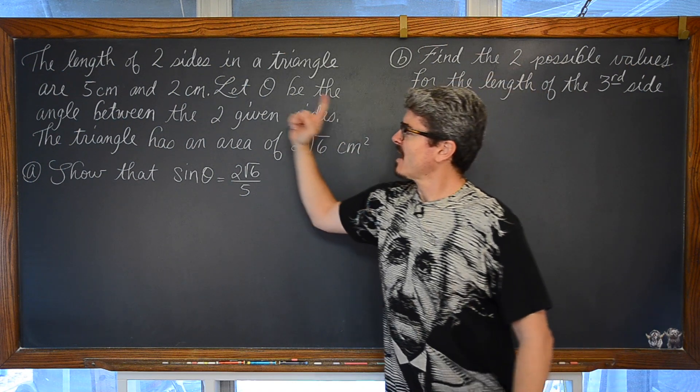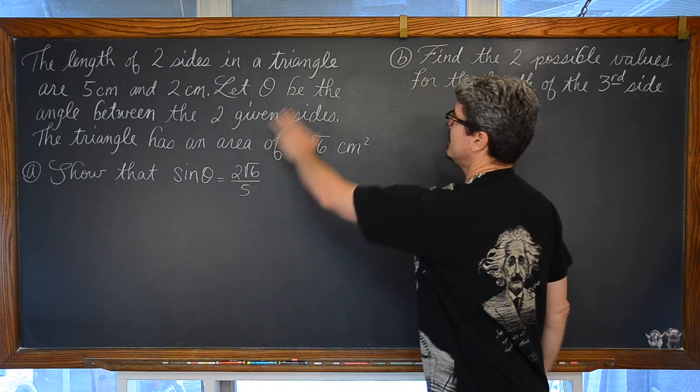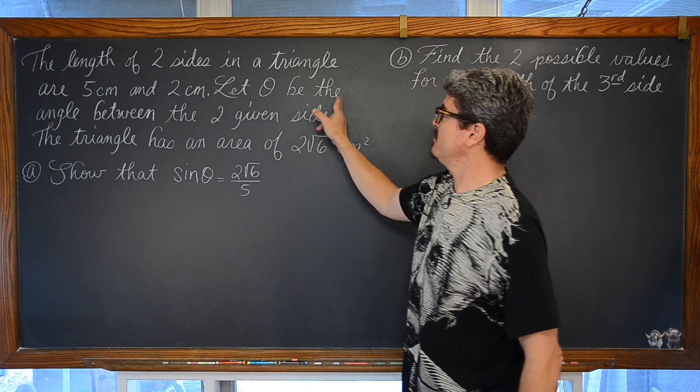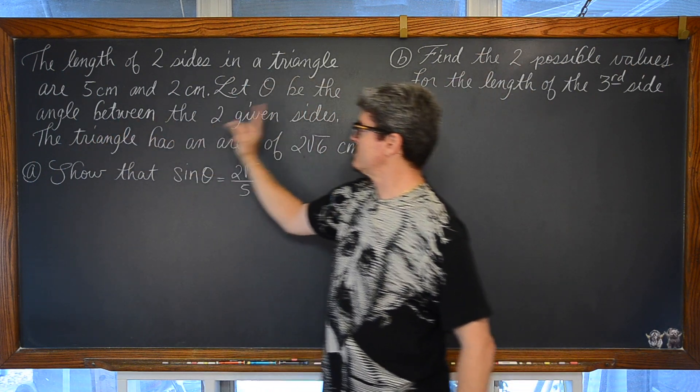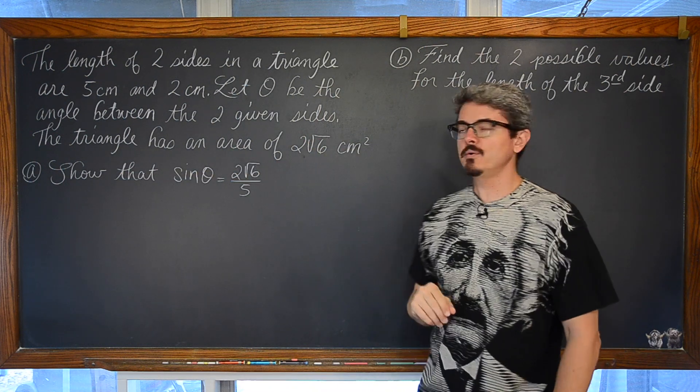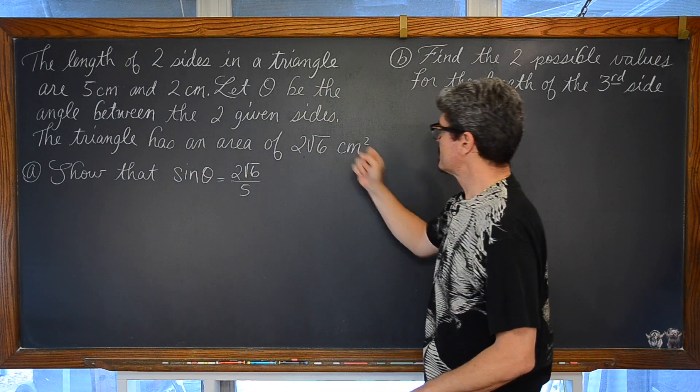Okay. The length of two sides in a triangle are 5cm and 2cm. We are going to let theta be the angle between the two given sides. The triangle has an area of 2 square root of 6 cm squared.